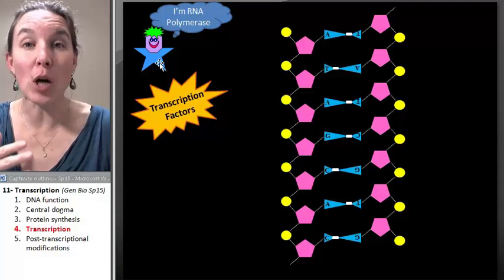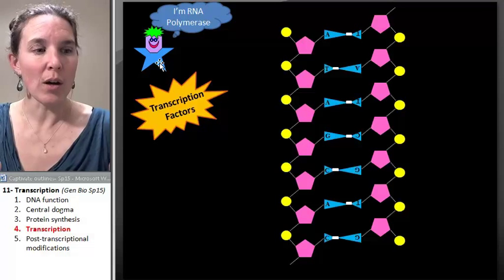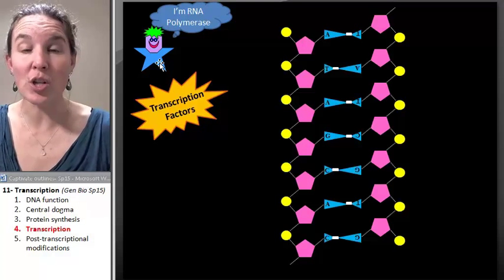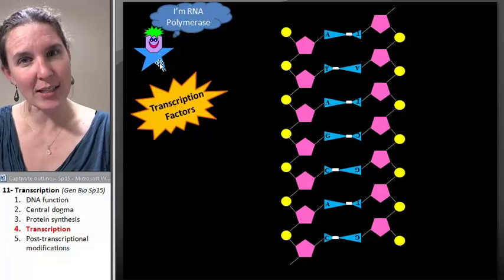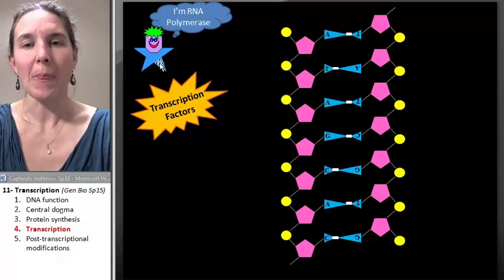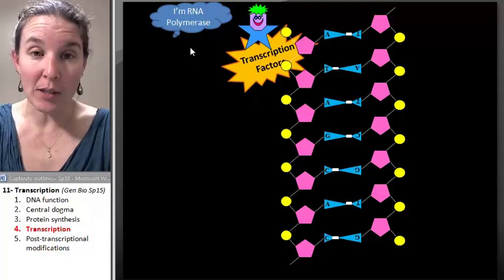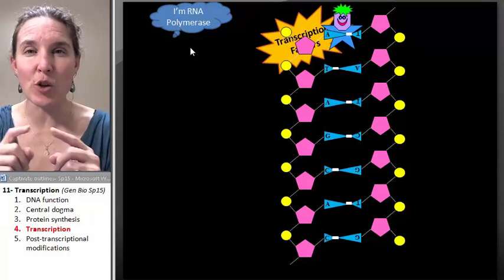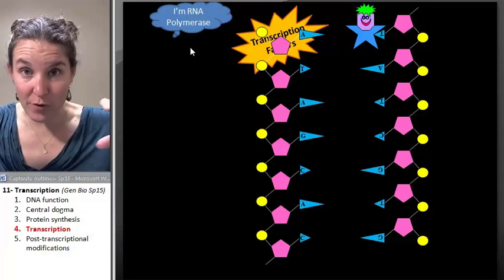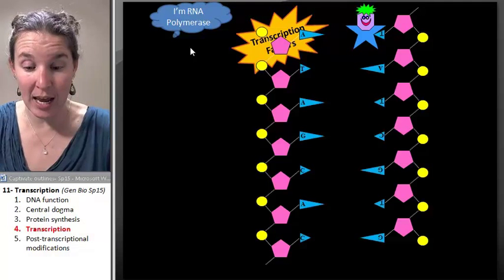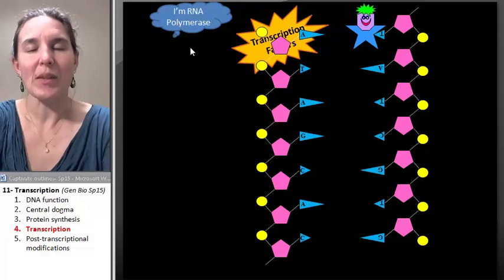There are molecular markers that RNA polymerase can identify and respond to to know where do I start? Like where is the beginning of a gene that needs to be translated into a protein? And in order to do that, there are some helpers. RNA polymerase makes use of transcription factors to actually separate out the DNA double strand. So they create like a little opening.